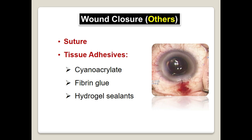In some cases, wound stromal hydration is not sufficient to secure a watertight closure. The common cause is improper wound construction. However, with proper wound construction, fluid leak may still continue in certain cases such as trichia, corneal scars, and in elderly patients. If the wound is unstable, do not hesitate to take a suture — a suture is not a shame.